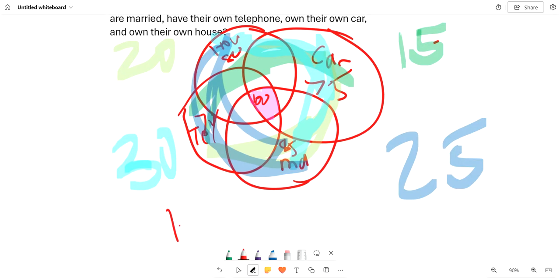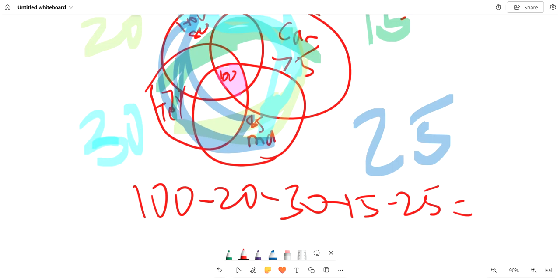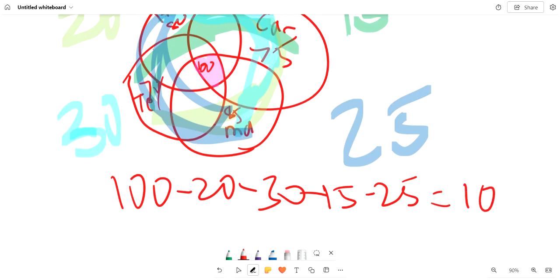That means 100 minus 20 minus 30 minus 15 minus 25. And that's the minimum of what can be in this pink area. So that equals 10, so the answer is 10.